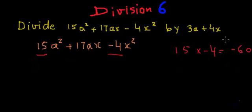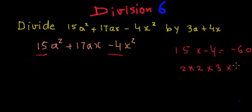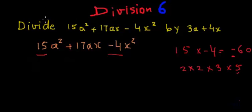Now let's find the factors of 60. The factors of 60 are 2 times 2 (factors of 4) and 3 times 5 (factors of 15). Since it is minus 60, any one of these factors can be negative. So we keep in mind that one of these factors is negative.